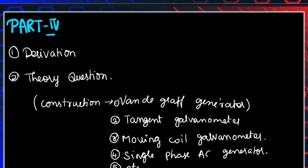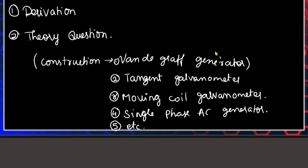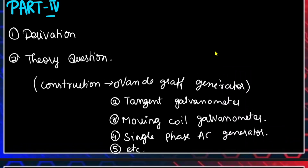The 5-mark questions are very important. Derivation questions are the most important type. Theory questions include constructions like the Van de Graaff generator, tangent galvanometer, and experiment types. There is an experiment in the 6th lesson on the speed of light, and also generator experiments. This information is all useful for the 5-mark section.